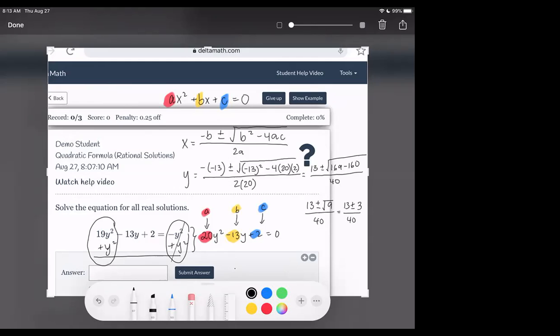Okay, so at this point we may now calculate our two solutions separately. One is 13 plus 3 over 40, the other is 13 minus 3 over 40. So let me write that out. 13 plus 3 over 40, and also 13 minus 3 over 40.